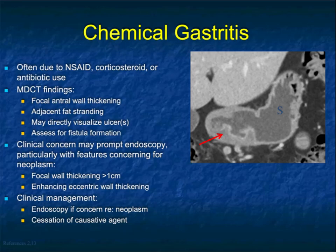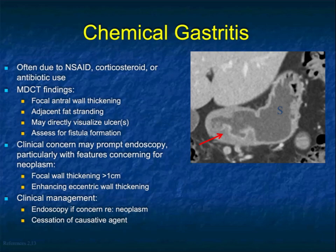One of the last things I'll speak about is gastritis. One of the challenges with CT is if patients have gastritis, it can very much simulate carcinoma. This was a patient with what I thought was an infiltrating tumor in the antrum. On biopsy times two, this was gastritis — often due to NSAIDs, corticosteroids, or antibiotic use. The appearance of fold thickening, possibly with ulceration, can very much simulate malignancies.